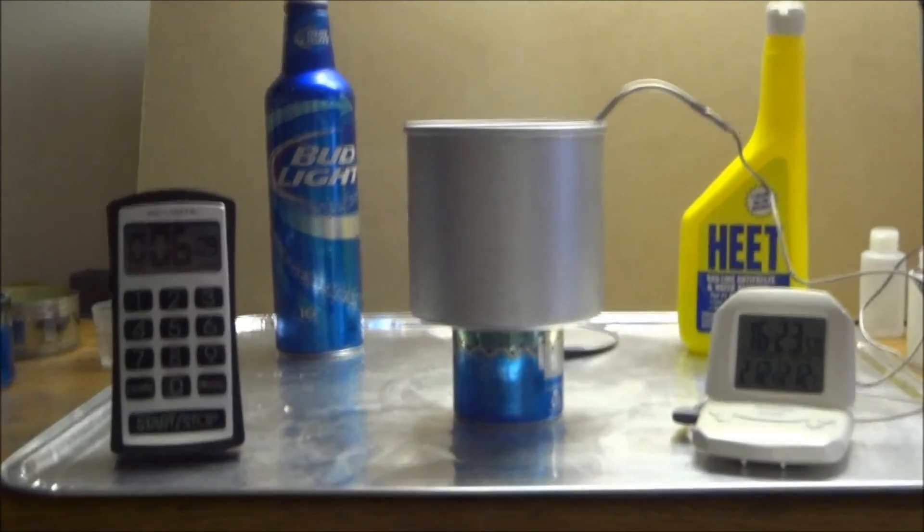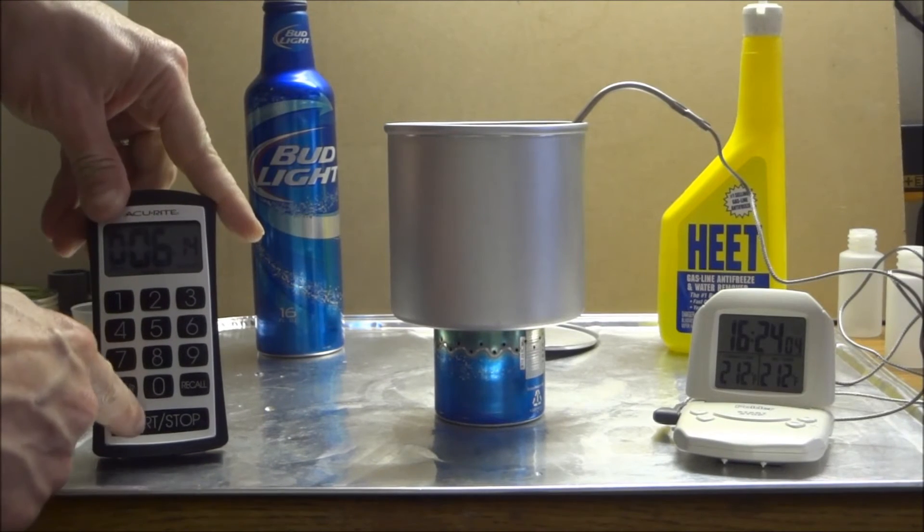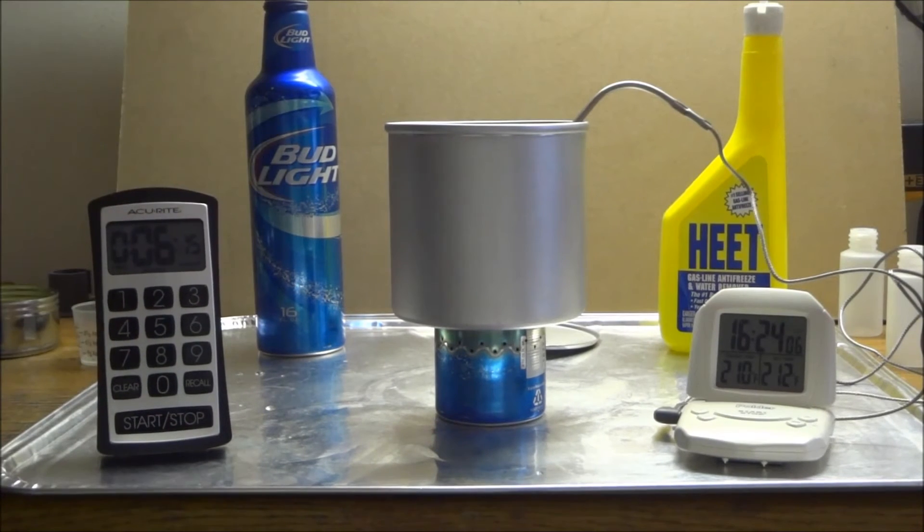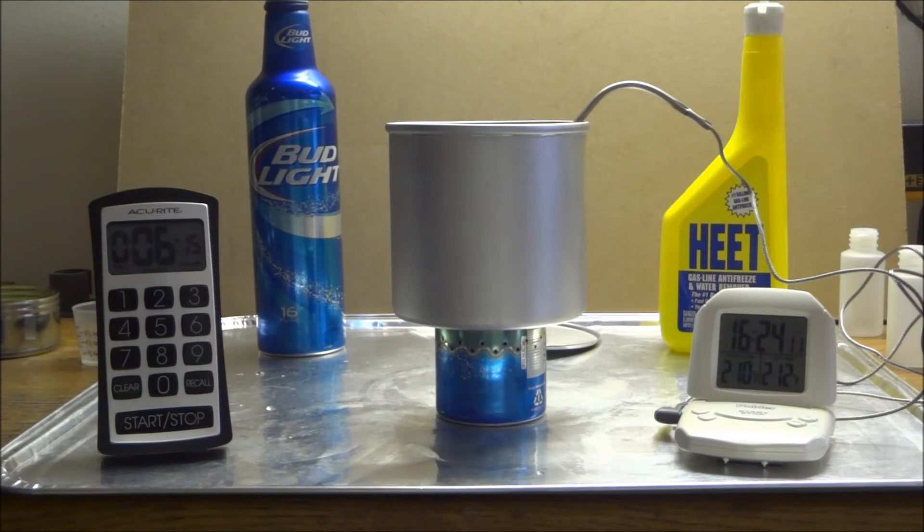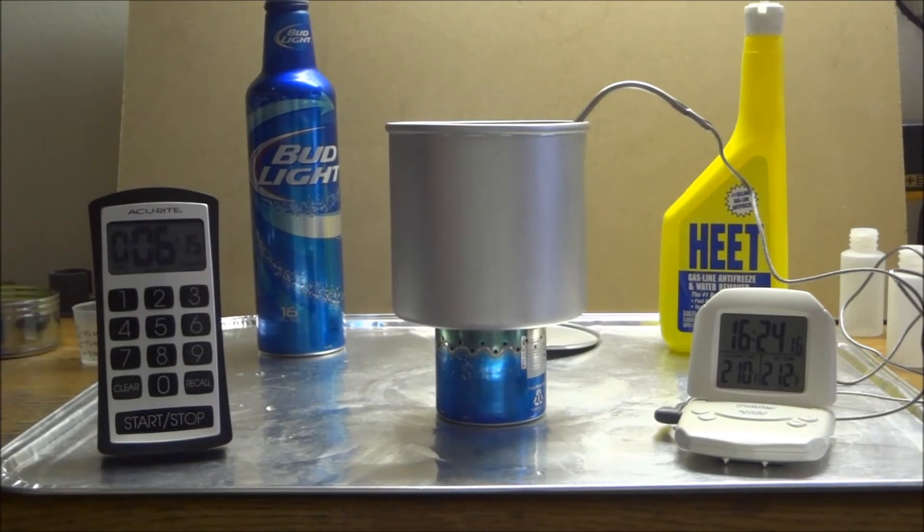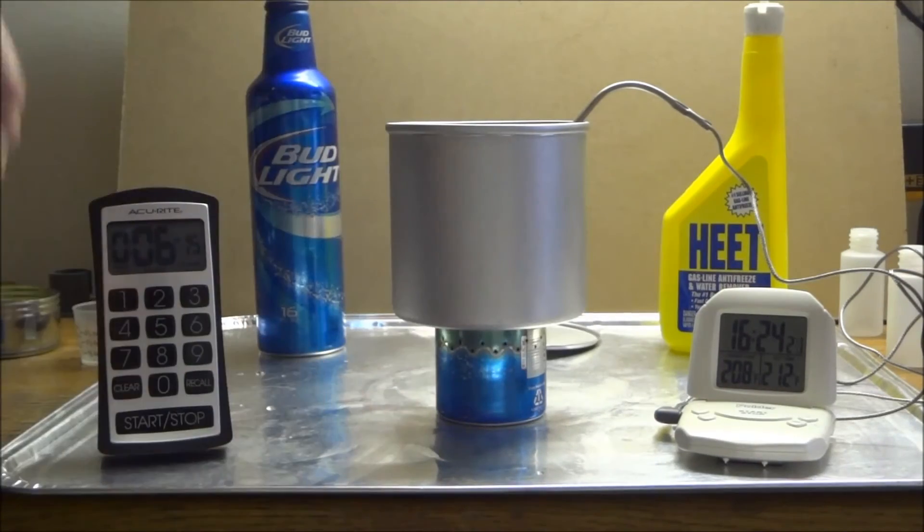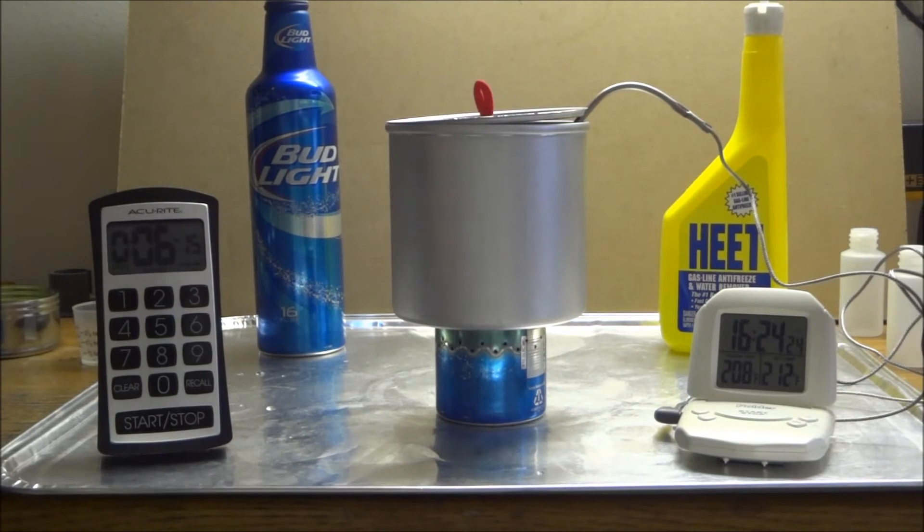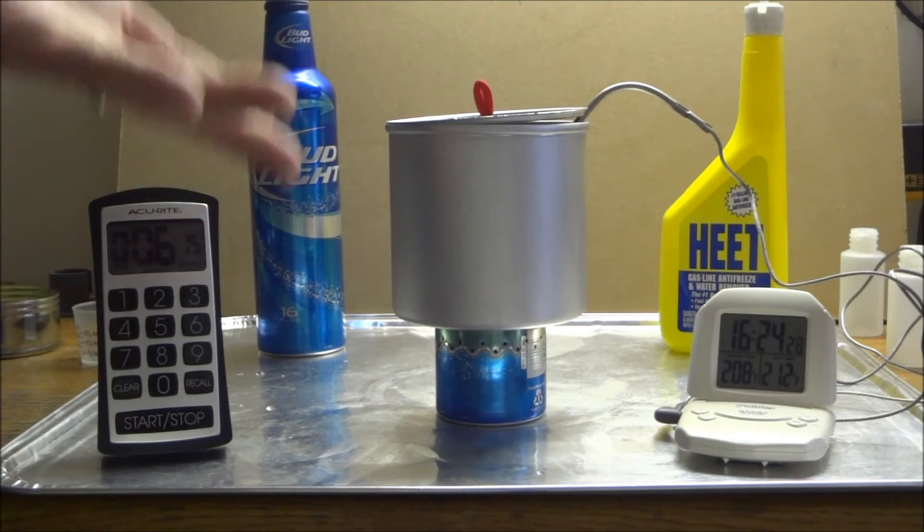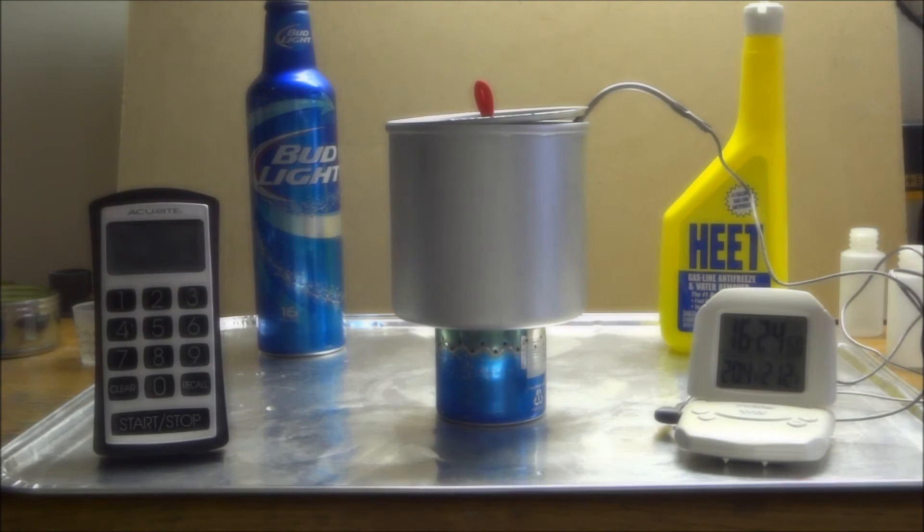Now something that I was never able to do with my original bottle stove was blow it out, and you saw that was fairly easy. So what I'd like to do is just see how much fuel I can reclaim. You can see we're at 210. It got up to 212 and now it's starting to drop down. It was around six minutes, 545 to six minutes. Those are great boil times.